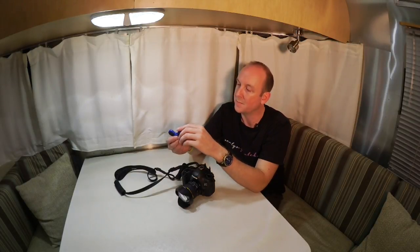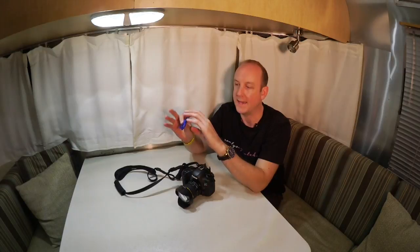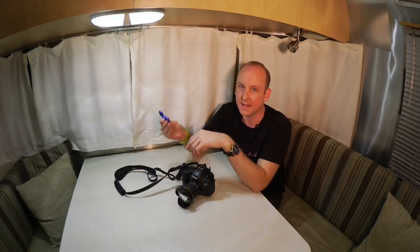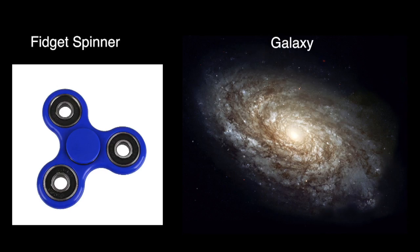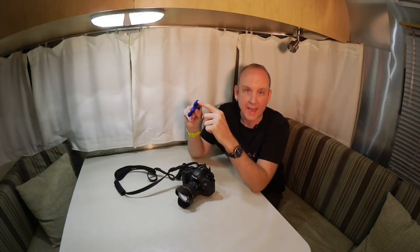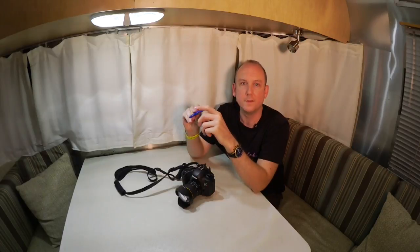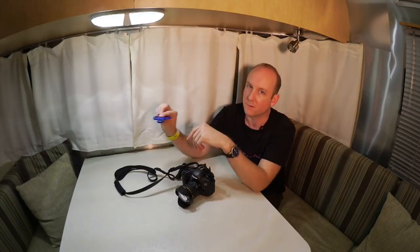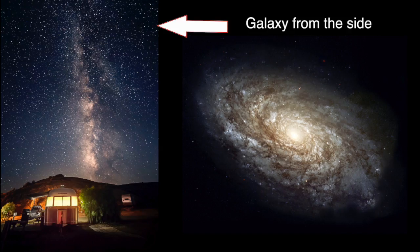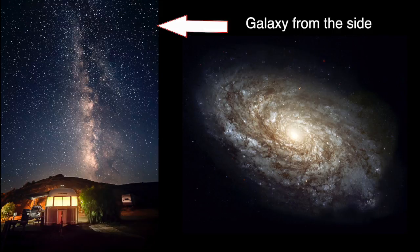So first, what is the Milky Way? As a spiral of billions of stars, planets and nebulae, it is our home in space, and Earth is just a little dot on the outer spiral. We view the Milky Way from the side, so the long bright strip that you see in the famous images is the core of the galaxy as viewed from the edge.